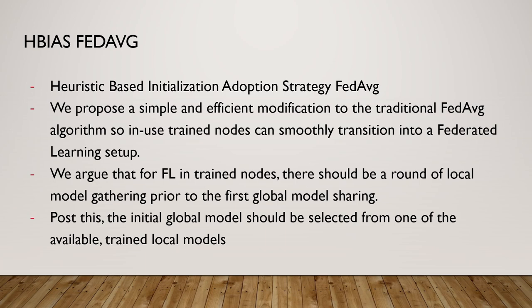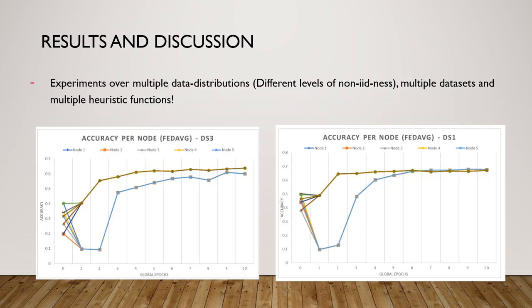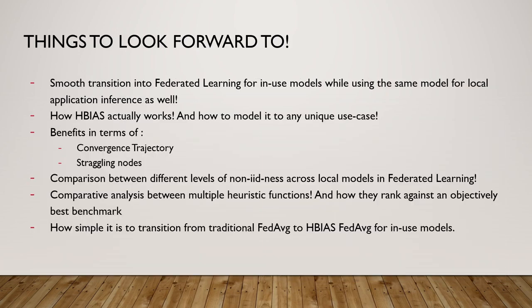We also research what the best local model to select is in this use case, since none of the information from the local models is available to us globally — we don't know anything about its performance or its data skewness. So how do we select the best performing local model for the first iteration of federated learning? We find much smoother levels of trajectory convergence with HBIS in comparison to traditional federated learning, and the same convergence trajectory smoothness across multiple levels of non-IIDness and across multiple heuristic functions.